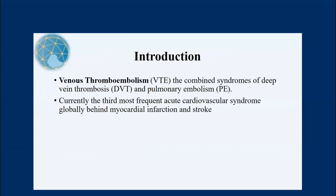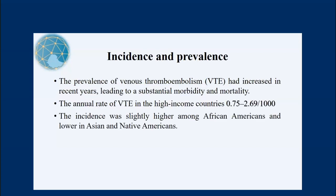Venous thromboembolism is a combined syndrome of deep venous thrombosis and pulmonary embolism. Currently it is the third most frequent acute cardiovascular syndrome globally, next to myocardial infarction and stroke. Regarding incidence, the prevalence of venous thromboembolism has increased in recent years, leading to substantial morbidity and mortality. The annual rate is high in high income countries — around 0.75 to 2.6 per 1000 individuals. This incidence is slightly higher among African Americans but lower in Asian and Native Americans. This data is from the US.